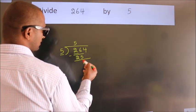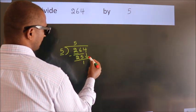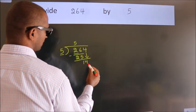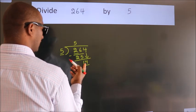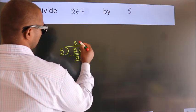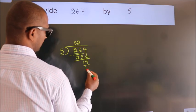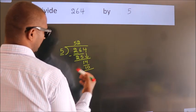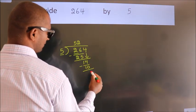After this, bring down the beside number. So 4 down, so 14. A number close to 14 in the 5 table is 5 twos, 10. Now we subtract. We get 4.